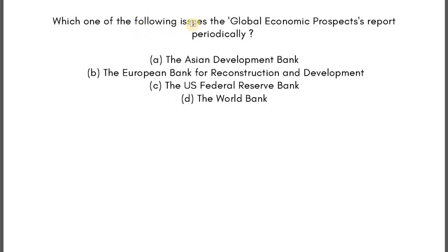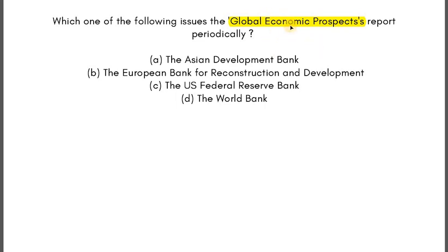Next question: which one of the following issues the Global Economic Prospects report periodically? Options are: the Asian Development Bank, the European Bank for Reconstruction and Development, the US Federal Reserve Bank, or the World Bank. Since the report is global and macro-economic — not sector-specific — the logic is that such reports are typically issued by the IMF or the World Bank. IMF is not among the options, but the World Bank is.